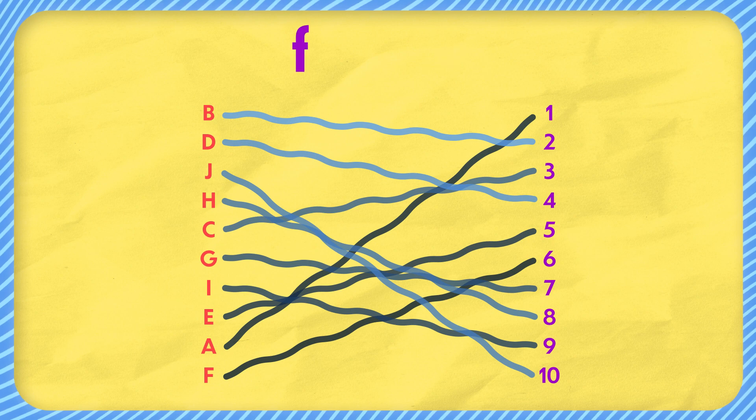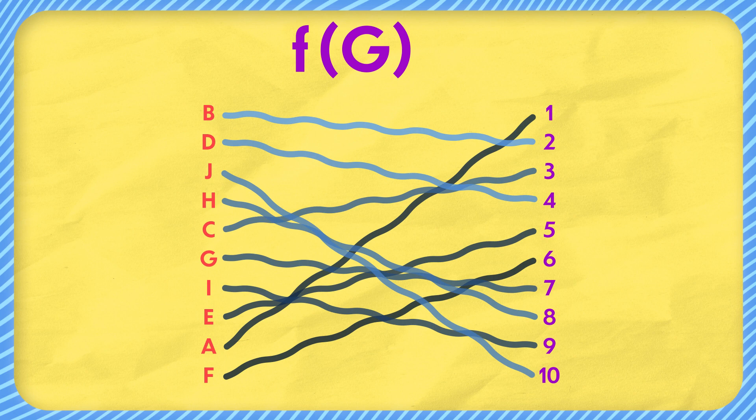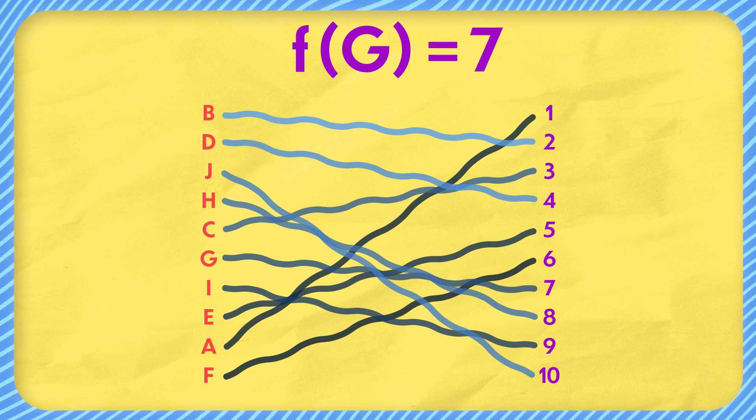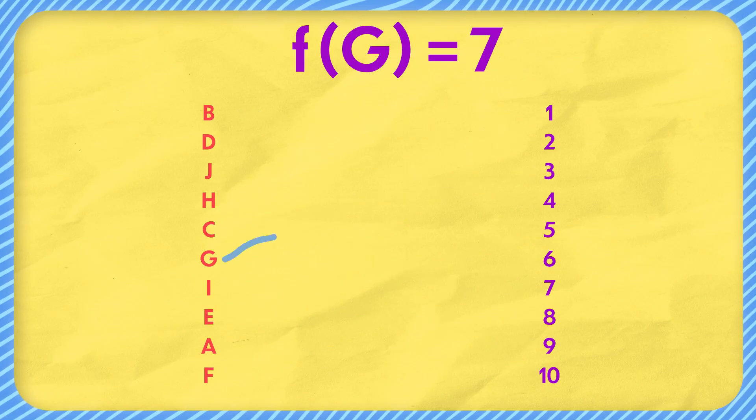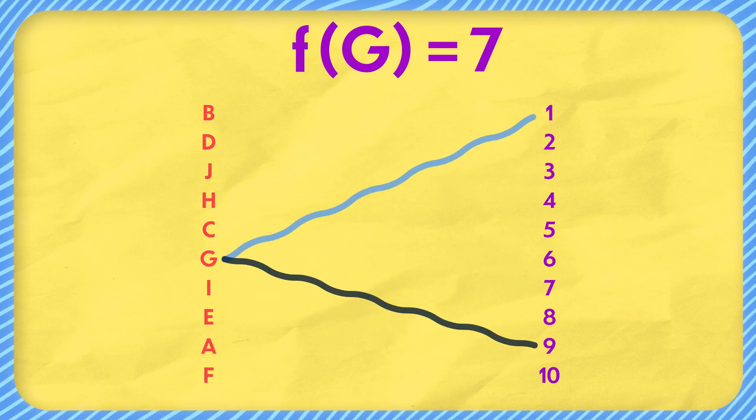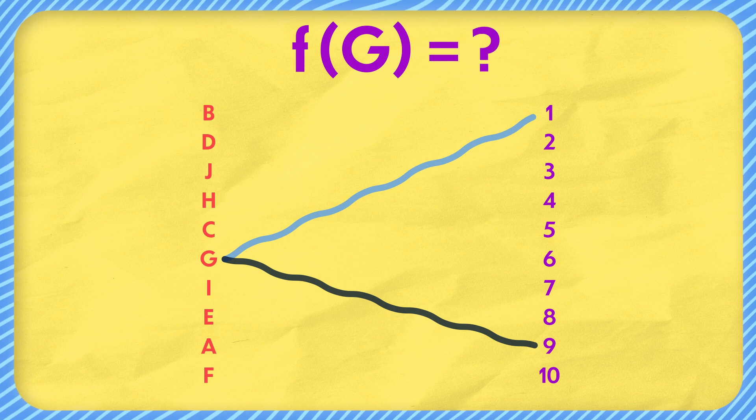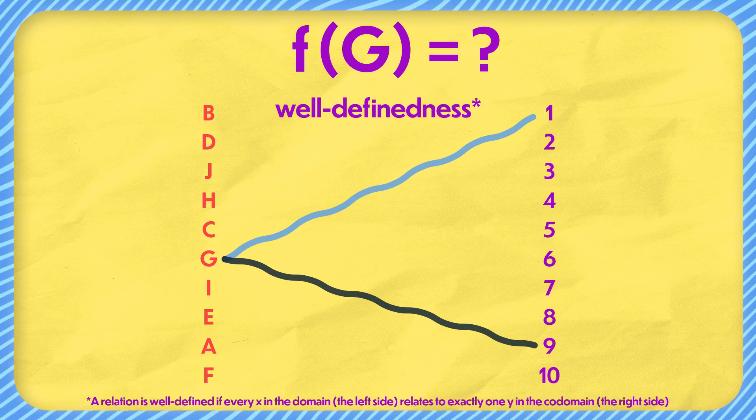One convention we have with functions is that if you write the function name F, and then in parentheses anything on the left side, like G for example, that's asking what number on the right connects to G, which is 7 in this case. Because of this, it's important that our function only connect to exactly one thing on the right side, because if, for example, G connected to multiple numbers on the right, what would we say F of G is? This property of functions is known as well-definedness.